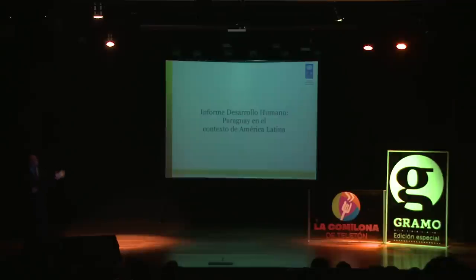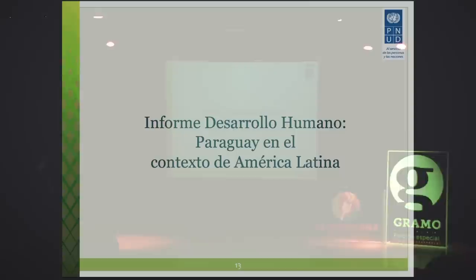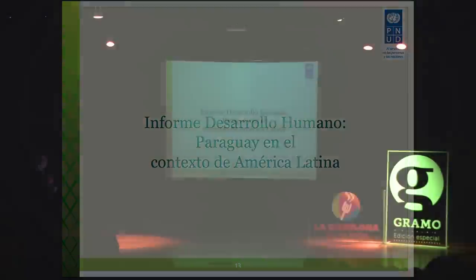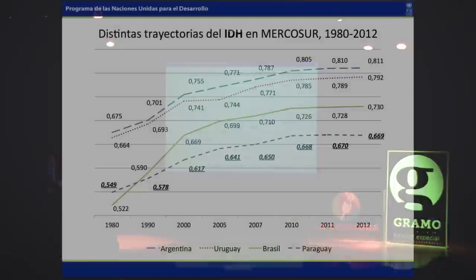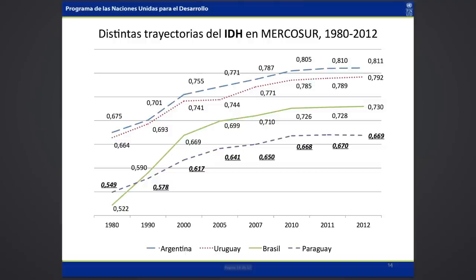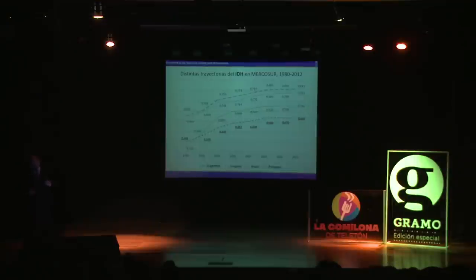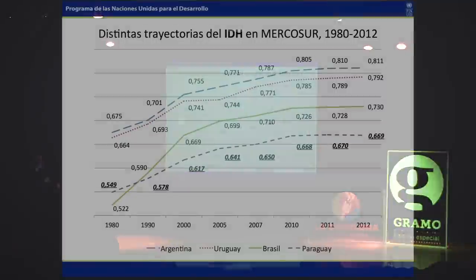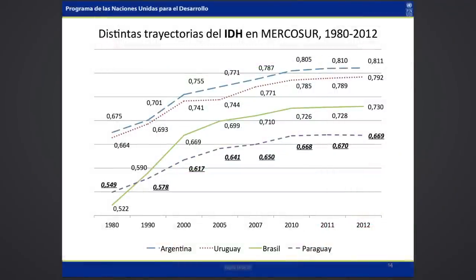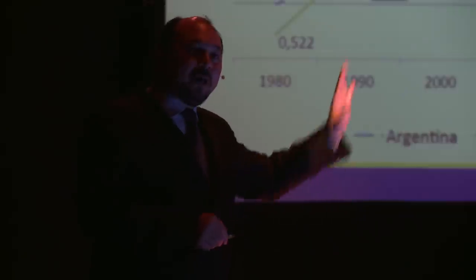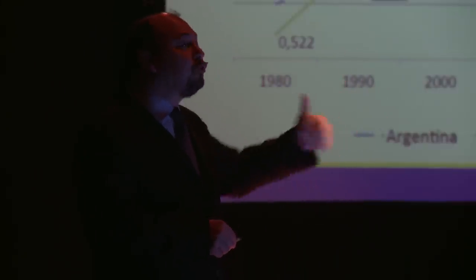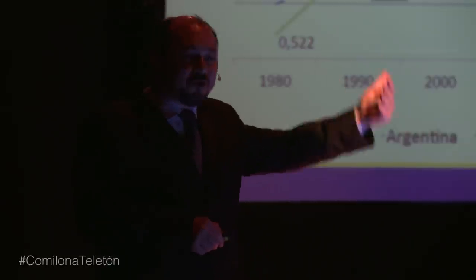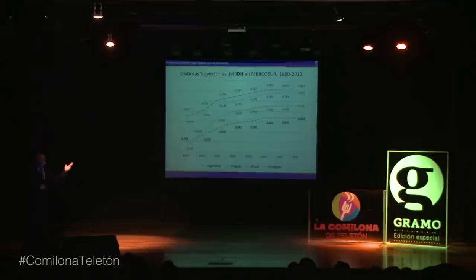Respecto a Paraguay, vamos a aterrizar acá. El informe de desarrollo humano, ¿qué nos pinta respecto a Paraguay en el contexto de América Latina? En el año 1980, Brasil estaba con un índice de desarrollo humano por debajo de Paraguay. Hoy, el último dato difundido a nivel mundial es el 2012, y vemos que Brasil está muy por encima de Paraguay. La velocidad con la que están mejorando los países de otras regiones es mucho más veloz y tiene que ver con estos impulsores que vimos recién.